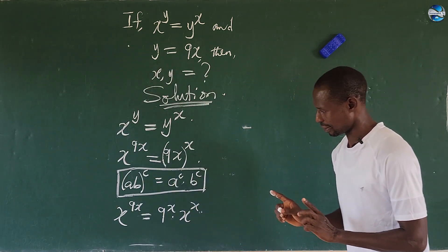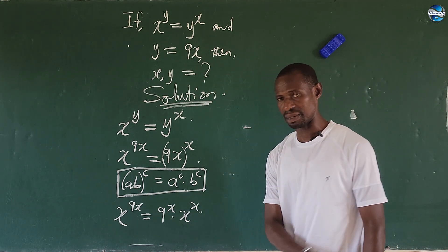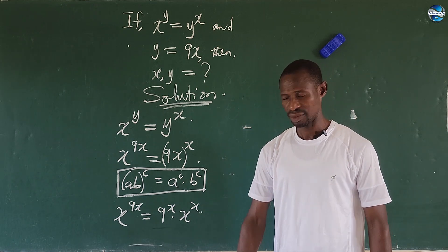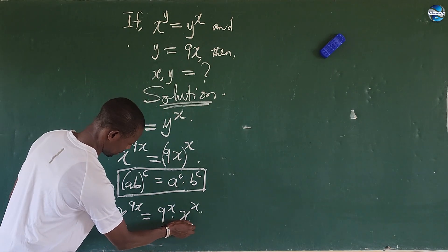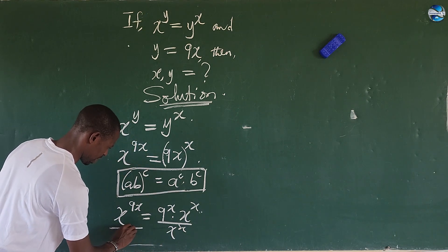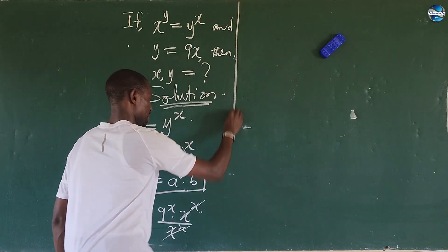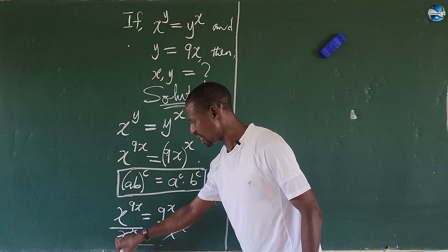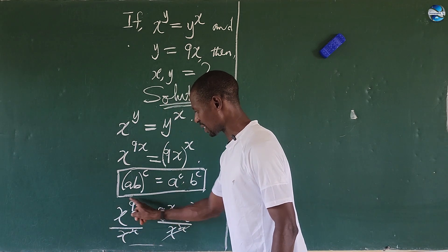Now let's look at something here. On the left we have x to the power of 9x, and on the right we also have x to the power of x at the base. So we simply divide both sides by x to the power of x. Because they share the same base, according to the divisional law of indices — when bases are the same, we subtract the exponents.